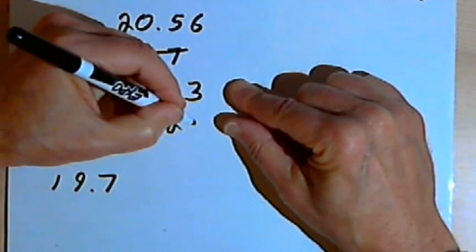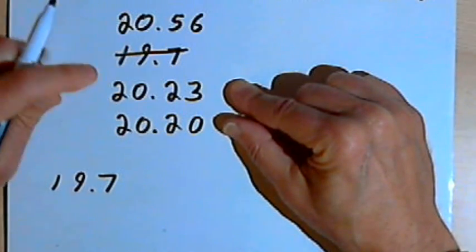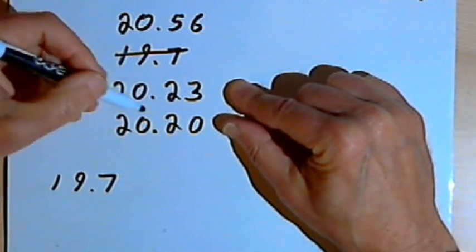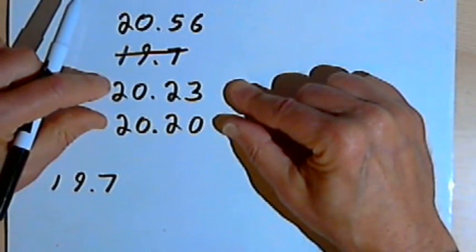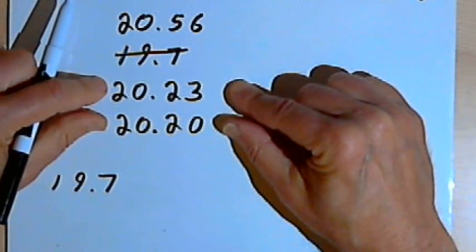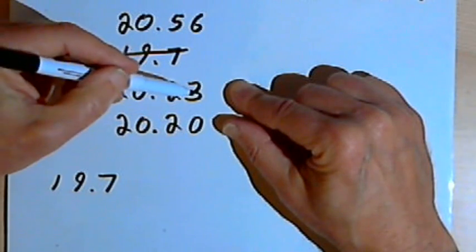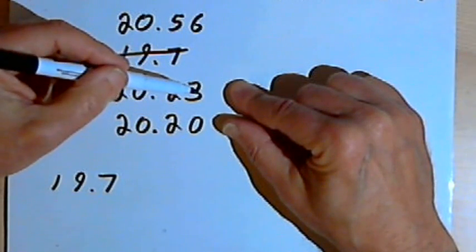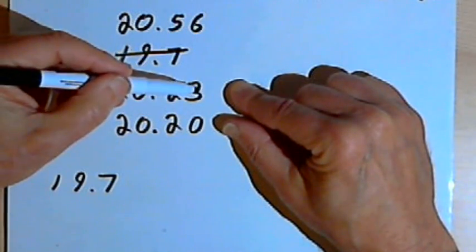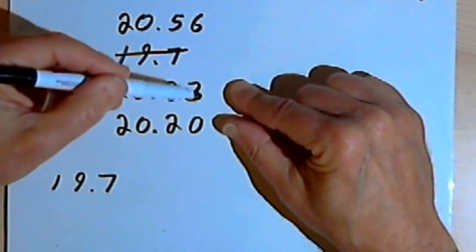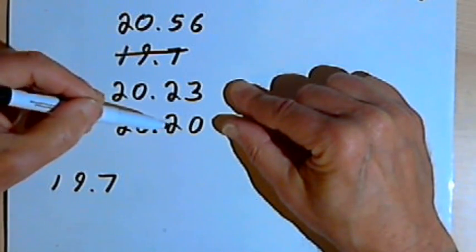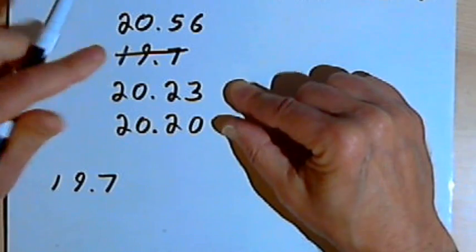So I'll add a zero at the end of this 20.2, and now both of these numbers have the same number of decimal places. So I can go over one more decimal place, I can go over to the hundredths column, and I see a 3 and a 0. That means the number with the 0, the 20.20, is the next smallest number.